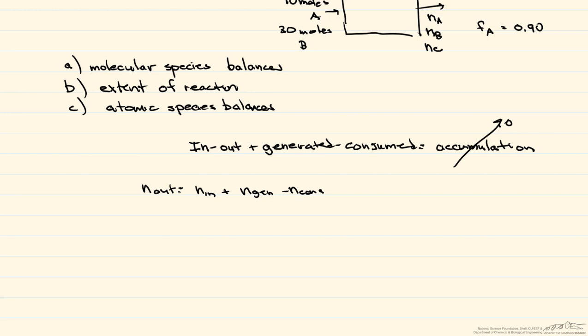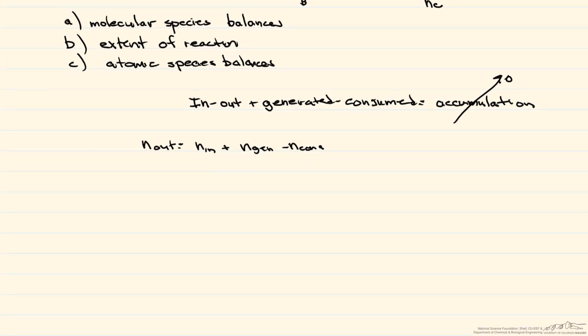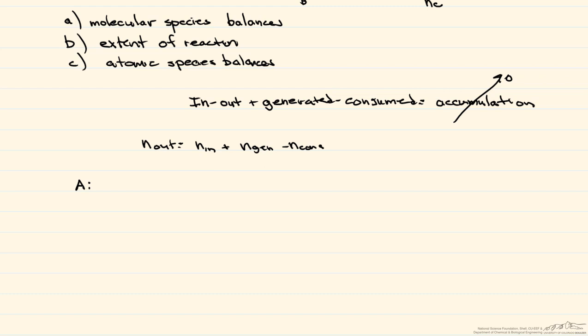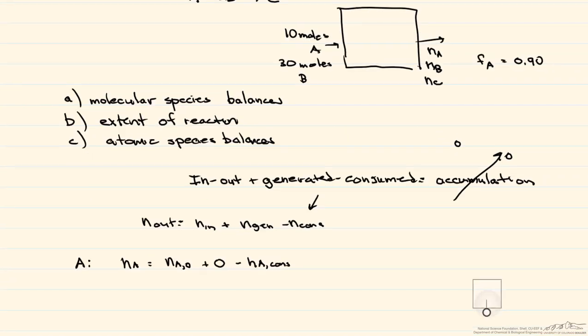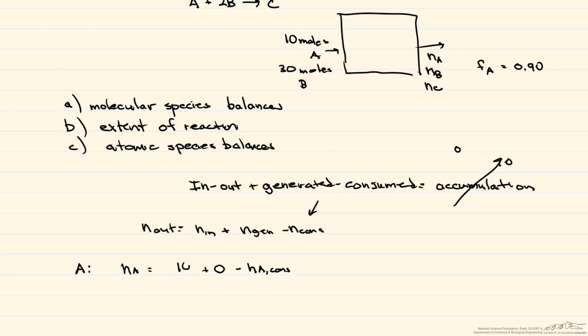We begin with the molecular species balance. According to the problem statement, A and B go into the reactor. Some of both are consumed, C is generated, and A, B, and C come out. The number of moles of A coming out equals the number of moles of A coming in — there's no A generated, but there is an amount consumed. We know from our picture that 10 moles of A come in.